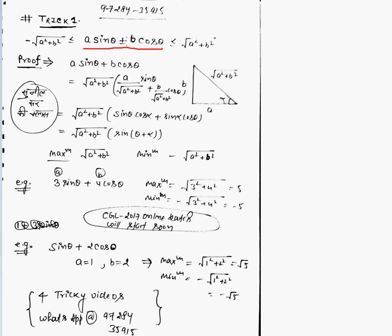Minimum is minus root of a squared plus b squared. Maximum is the same with plus sign. Now from where does it come? Math is to learn, not to cram.